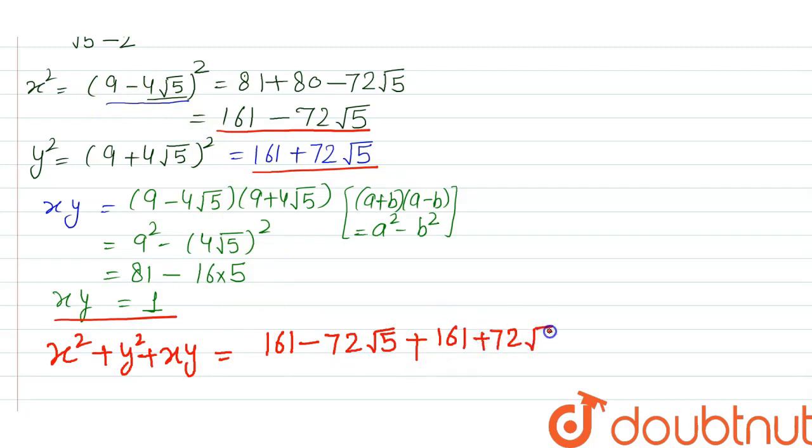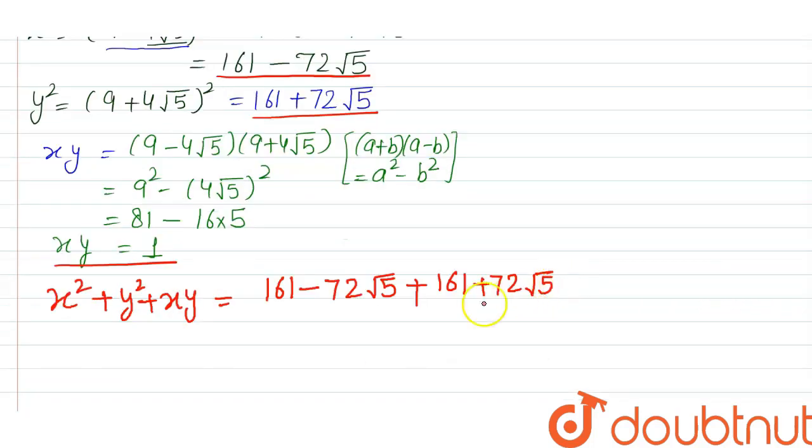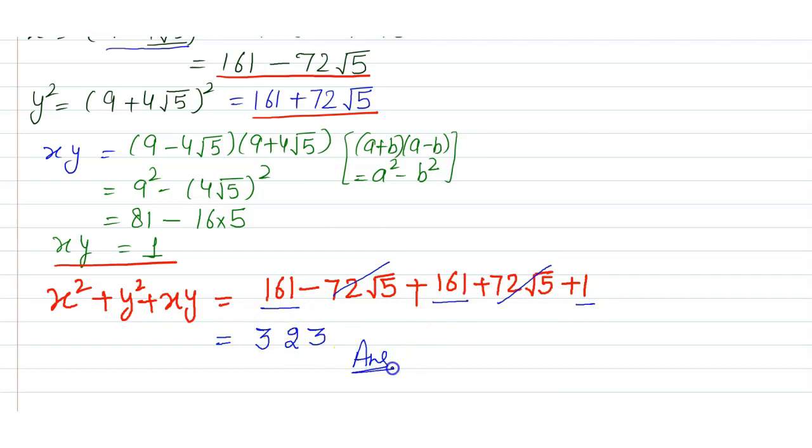And at last, xy is +1. So this 72√5 and 72√5 will cancel each other, and then 161, 161, and 1, it will be 323. This is your final answer. Thank you.